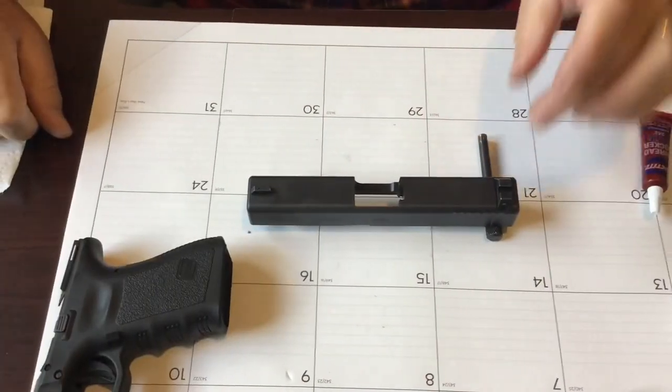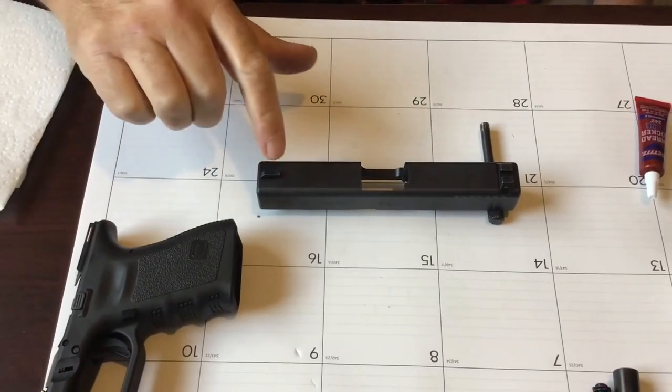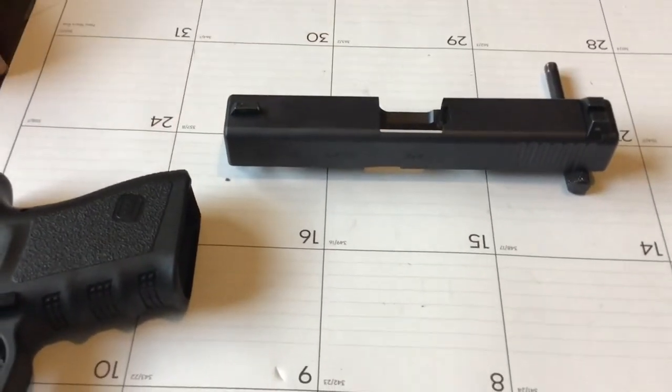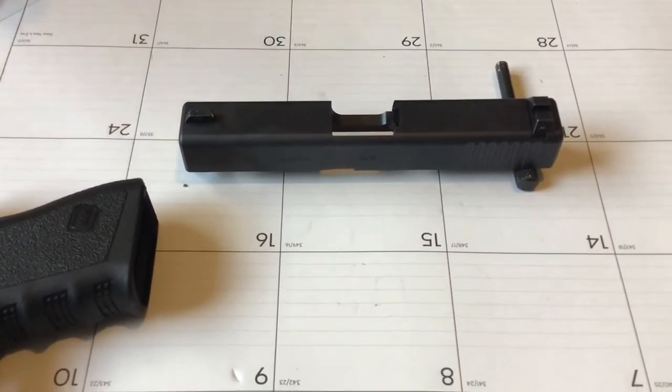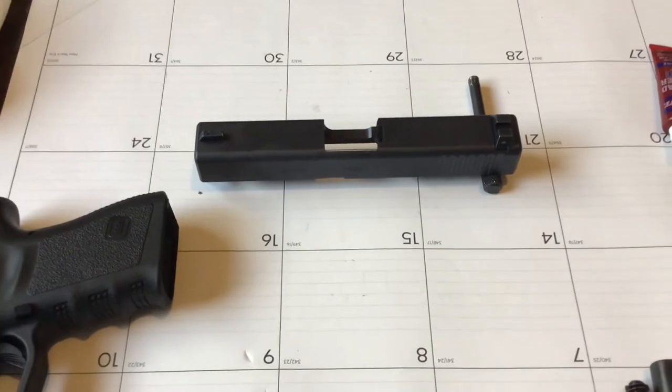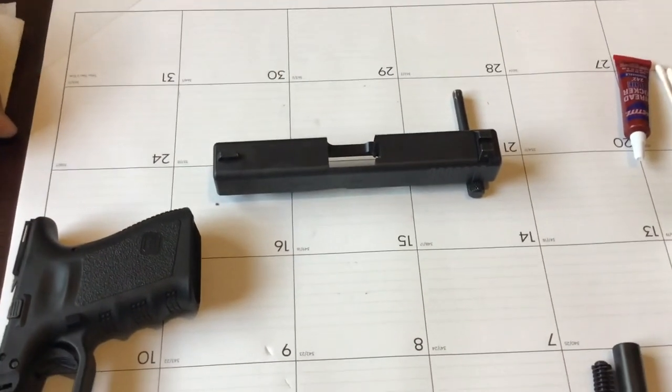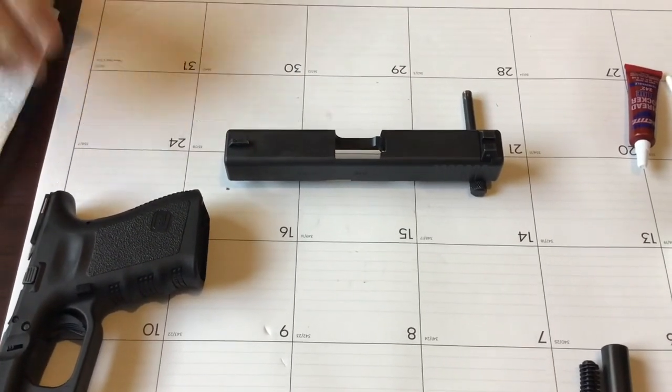Just that simple. We've got our new sights mounted on our slide. We now have a steel or metal front sight that's not just going to grind off from holster draws. We've got night glow or night illumination sight picture now. All of that done within just a few minutes of work and a couple of tools, and we've improved the standard Glock.